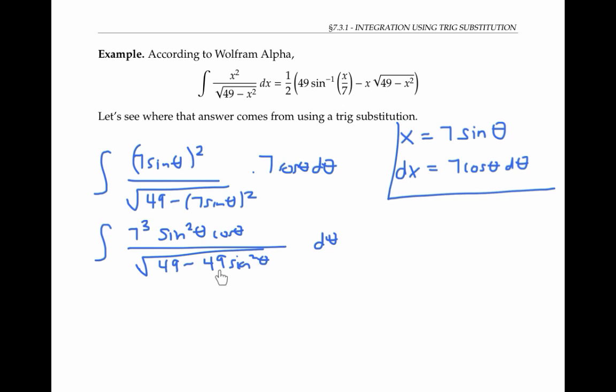I'll factor out the 49 here. Since the square root of 49 is seven, I can pull a seven out of the square root sign.